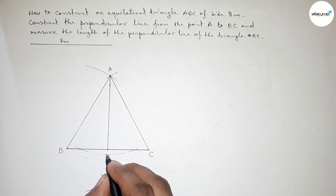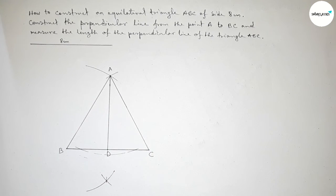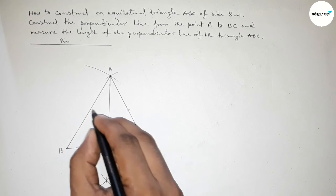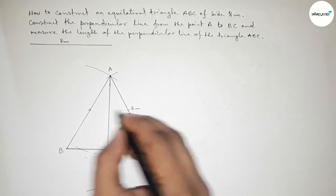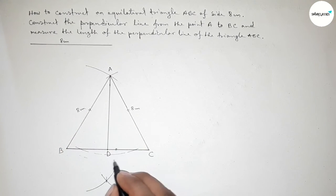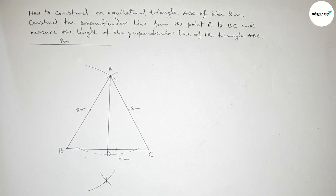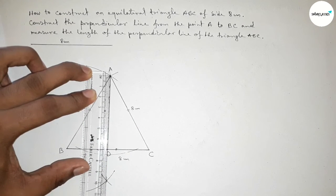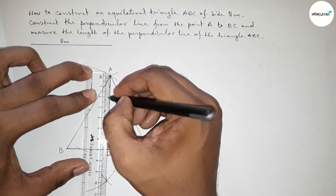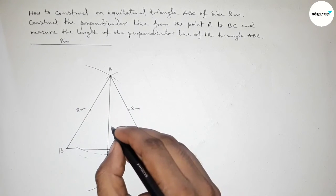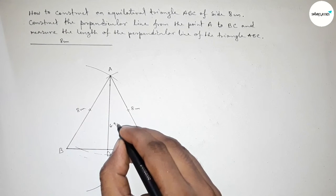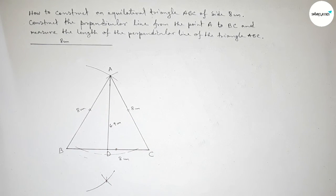Taking that point as D. All sides of this triangle are equal — this side, this side, and this side are all equal. So this side is 8 centimeter, this side 8 centimeter, and this side also 8 centimeter. Now measuring the length of the perpendicular line AD using a scale: one, two, three, four, five, six — this is approximately 6.9 centimeter. So AD equals 6.9 centimeter approximately.